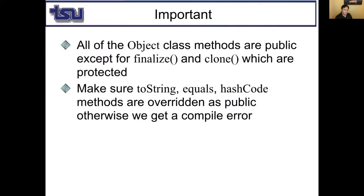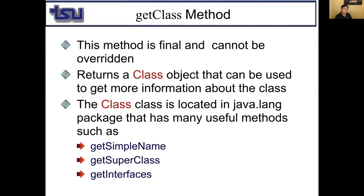All Object class methods are public except finalize and clone. Make sure toString, equals, and hashCode methods are overridden as public — otherwise you get a compiler error, since they're originally defined as public in Object class. The getClass method is final and cannot be overridden.